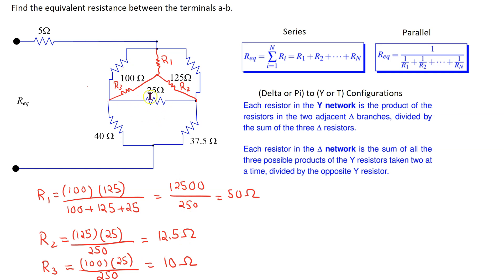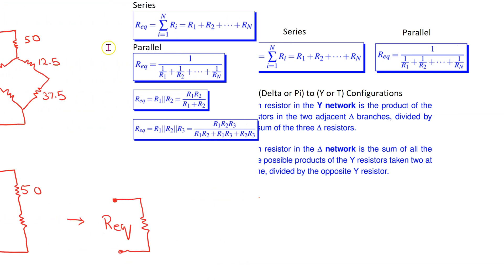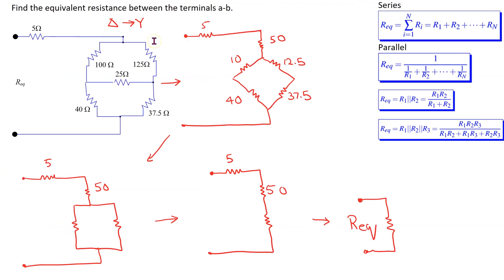Replacing the upper delta with a Y arrangement helps to make some resistors in series and parallel, which helps with the simplification. Using the delta to Y transformation applied to the upper delta, the circuit can be redrawn. In this redrawn circuit, the upper delta has been replaced by the Y resistors.